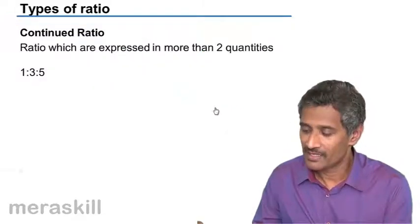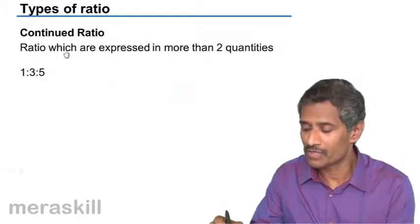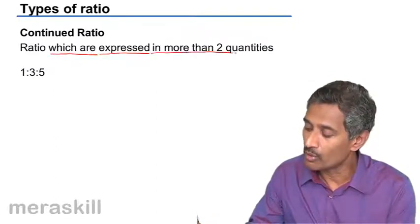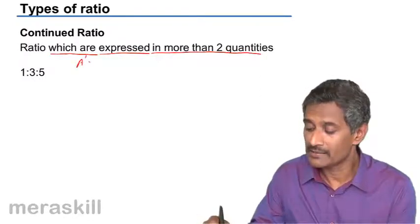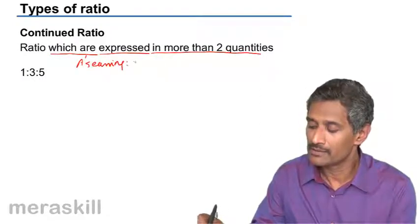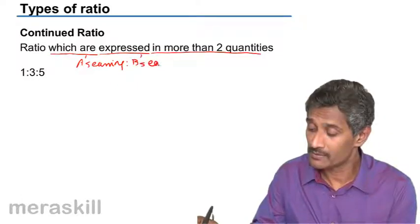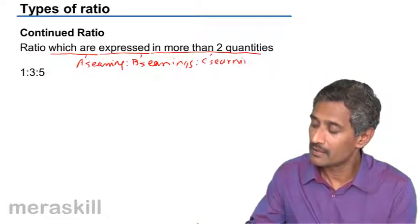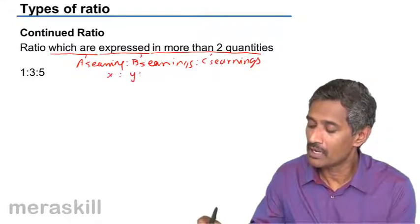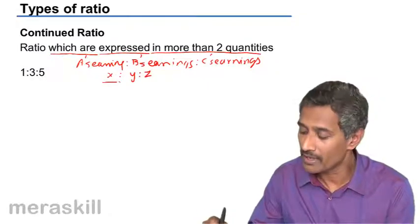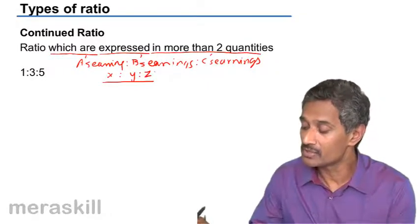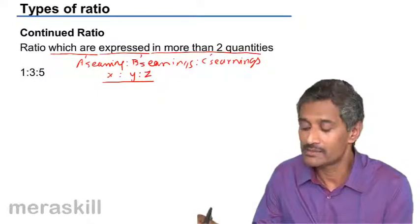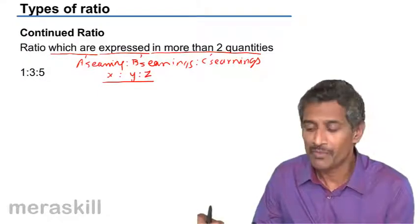Let's move ahead. Finally, we have the continued ratio — a ratio expressed in more than two quantities. For example, A's earnings is to B's earnings is to C's earnings is X is to Y is to Z. It becomes a continued ratio as it involves more terms. If you put in D's earnings, it's a continued ratio with four terms.